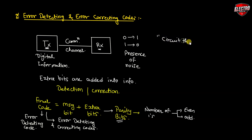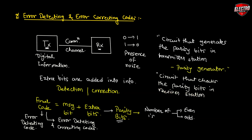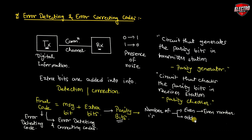The circuit that generates the parity bits in the transmitter station is known as a parity generator, and the circuit that checks the parity in the receiver station is known as a parity checker. In even parity, the added bit makes the total number of ones an even amount. In odd parity, the added bit makes the total number of ones an odd number.